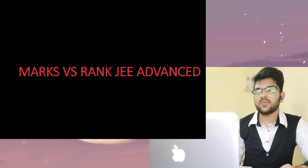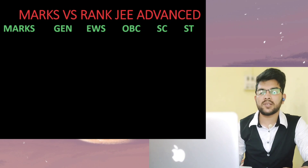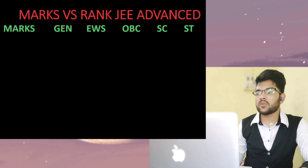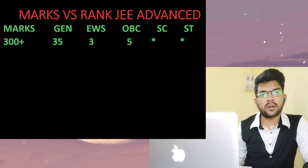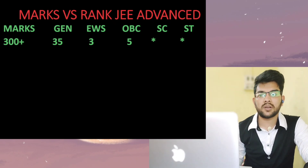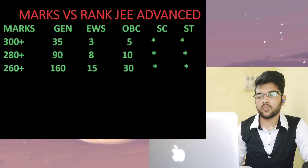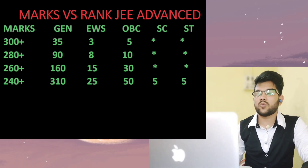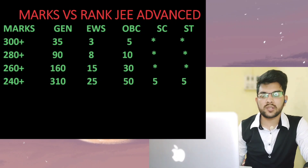Now the most important part — marks versus category rank for JEE Advanced. For 300+ marks, general rank will be under 35, EWS under 3, OBC under 5, and no data available for SC/ST. For 280+ marks: general under 90, EWS under 8, OBC under 10. For 260+ marks: general under 160, EWS under 15, OBC under 30. For 240+ marks: general CRL rank under 310, EWS under 25, OBC under 50. For SC and ST candidates scoring 240+, rank will be under 5 — 100% sure.